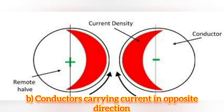In the second case, when conductors carry current in opposite directions, the close part of the conductor carries more current and the magnetic field of the far half of the conductors cancel each other. Thus the current is zero in the remote half of the conductor and crowded at the nearer part of the conductor.